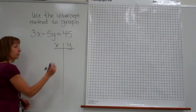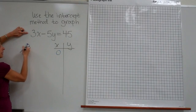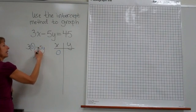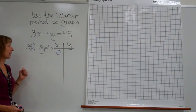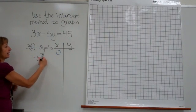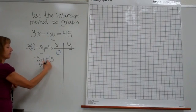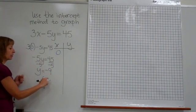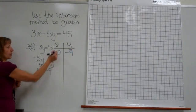To find the y-intercept, we plug 0 in for the x-variable. So 3(0) minus 5y equals 45. Working out the value of y when x is 0: 3 times 0 is 0, so 0 minus 5y, or negative 5y, equals 45. Divide both sides by negative 5, and we get y equals negative 9. So when x is 0, y is negative 9. There's one of our ordered pairs.